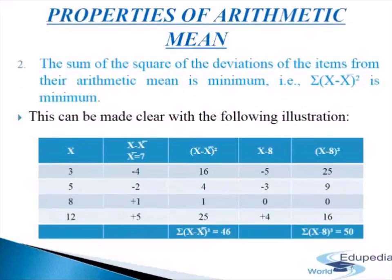Second property: the sum of the squares of the deviations of the items from their arithmetic mean is minimum. That is, sigma(x minus x-bar) squared is minimum, where x is the variable and x-bar is the arithmetic mean of the series. This sum is less than the sum of the squares of the deviations of the items from any other value.